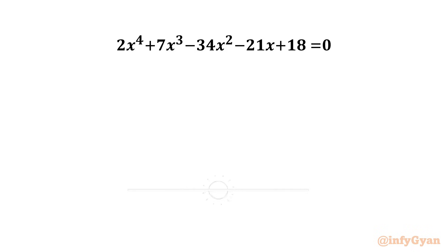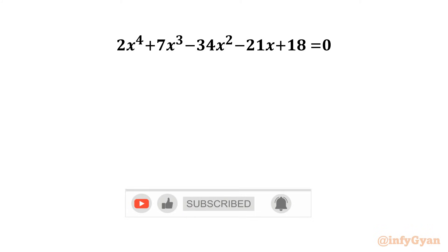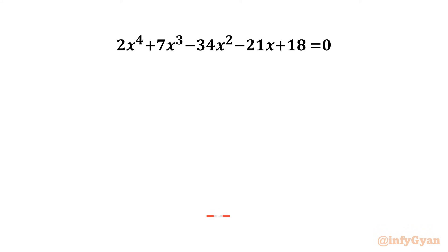Welcome to Infigyan, my dear friends. Today in this video we will be solving another very interesting question from algebra. We have to find 4 solutions for 2x⁴ + 7x³ - 34x² - 21x + 18 = 0.